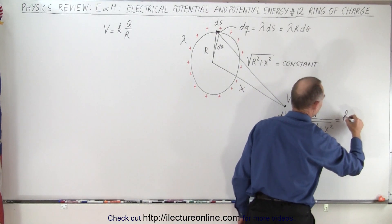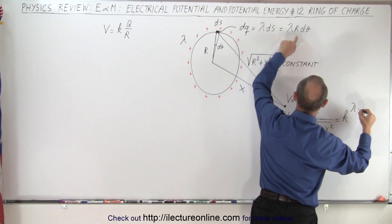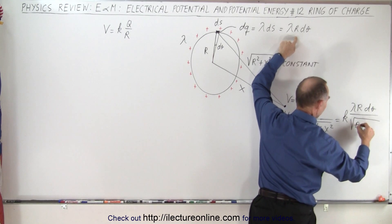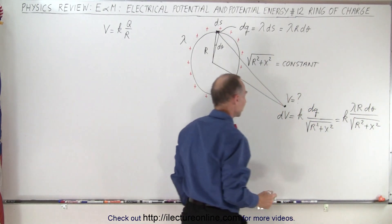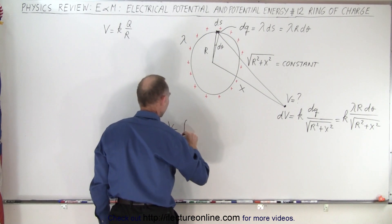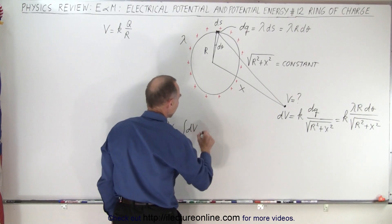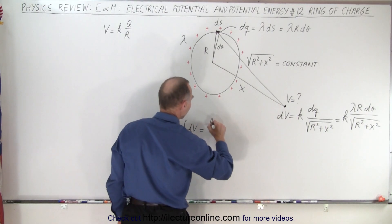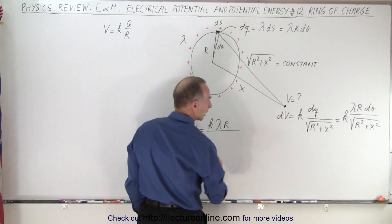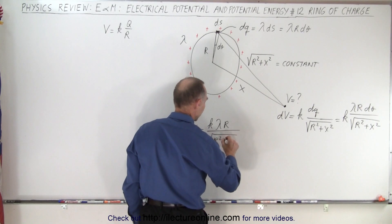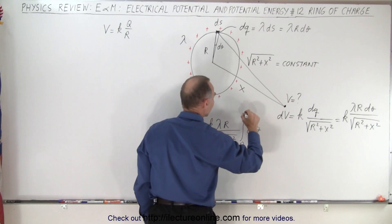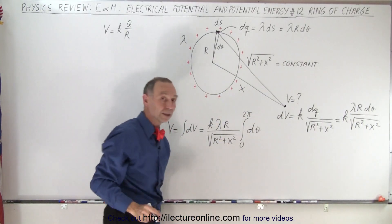So we can rewrite dv as k times the linear charge density times the radius times dθ, all divided by the square root of r squared plus x squared. That means the voltage at that point is equal to the integral of all the dv's, taking all the constants out: k times lambda times r divided by the square root of r squared plus x squared, times the integral of dθ from 0 to 2π, integrating all the way around the ring.